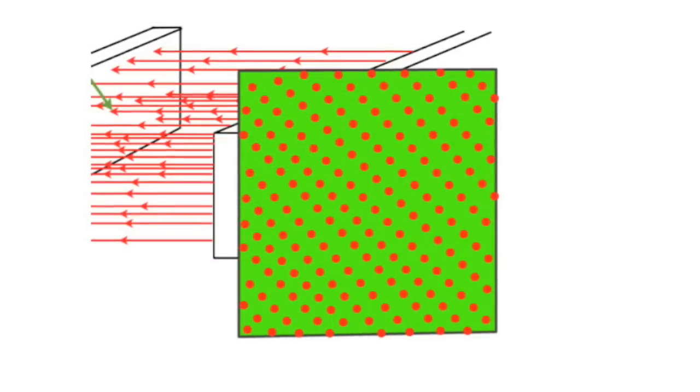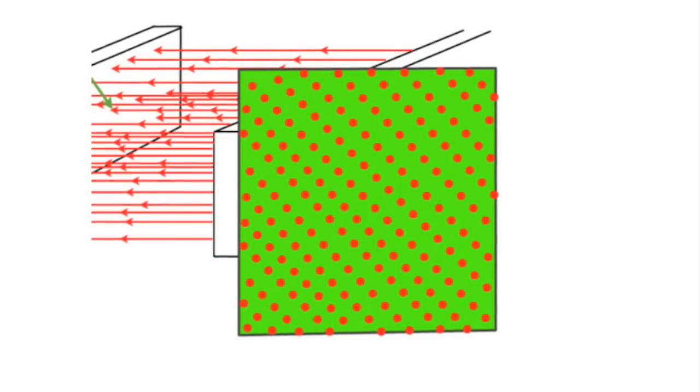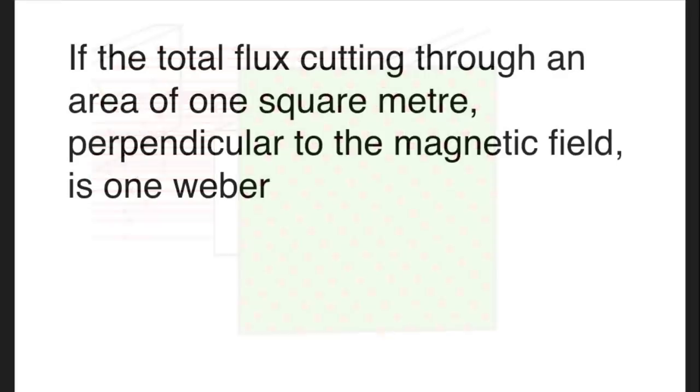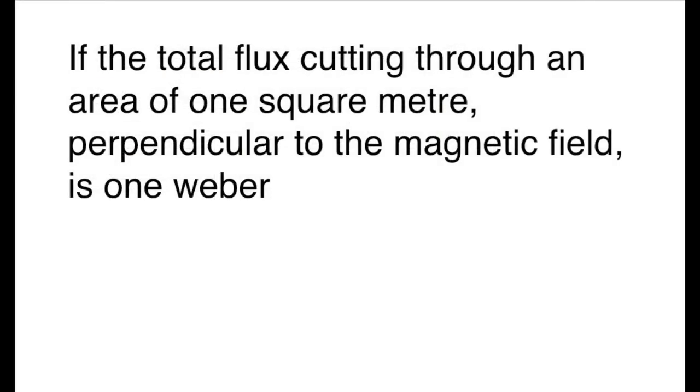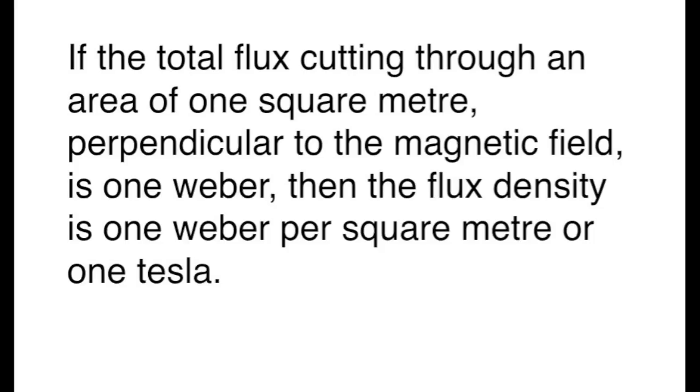If the total flux cutting through is one Weber, then that is a flux density of one Weber per square meter. Webers per square meter are also called Tesla. So a flux density of one Tesla is one Weber per square meter.